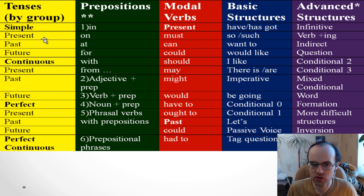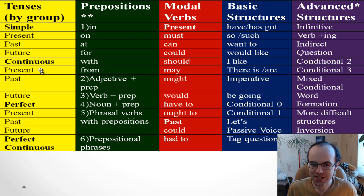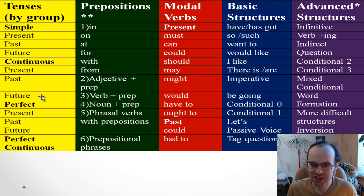You need to start with simple tenses. Present simple: 'I speak English quite regularly.' Past simple: 'I went there.' Future simple: 'I'll learn English with your help.' Present continuous: 'I'm watching this video.' Past continuous: 'I was learning English all day.' Future continuous: 'I will be showing better and better results.'